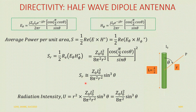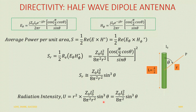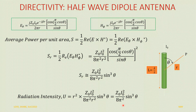Once we know the radiation density, we calculate the radiation intensity by multiplying by r². So U equals r² times Z0*I0² by 8*pi²*r² * sin(theta), giving radiation intensity U equal to Z0*I0² by 8*pi² * sin(theta). This radiation intensity also has a maximum value.